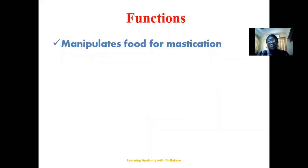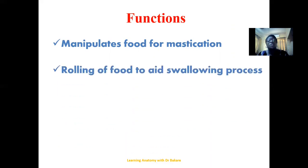The functions of the tongue include helping to manipulate food during the process of mastication. The tongue is able to mold the food and place it properly between the upper and the lower dentition so that the chewing process can effectively be carried out. It also helps in rolling food to aid swallowing, molding food so that it can be directed and moved through to the oral pharynx.